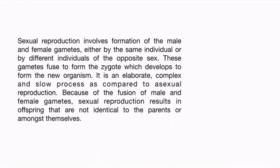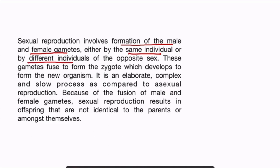Sexual reproduction involves formation of the male and female gametes, either by the same individual or by different individuals of the opposite sex. These gametes fuse to form the zygote, which further develops to form the new organism.